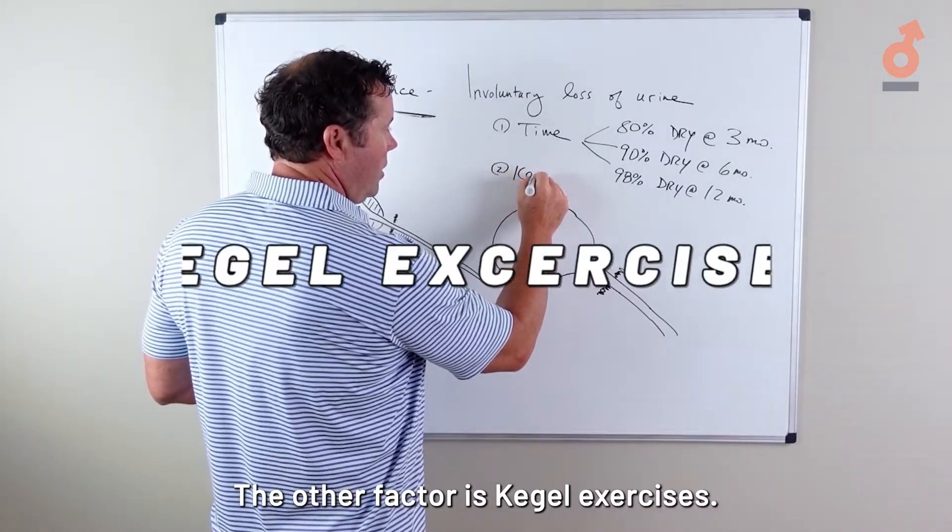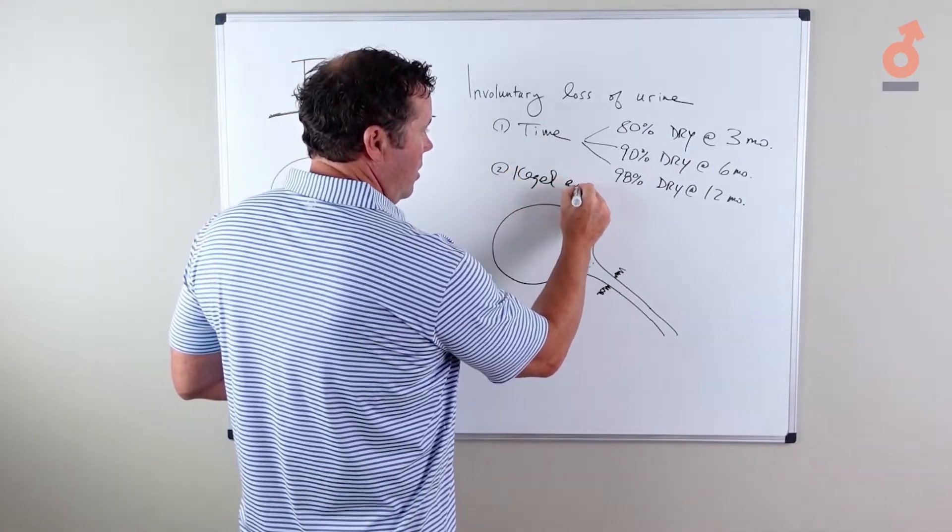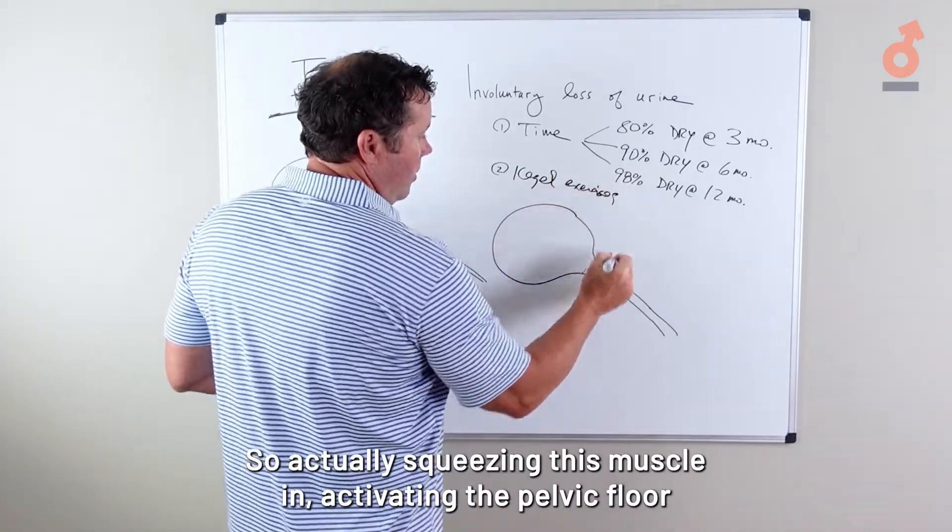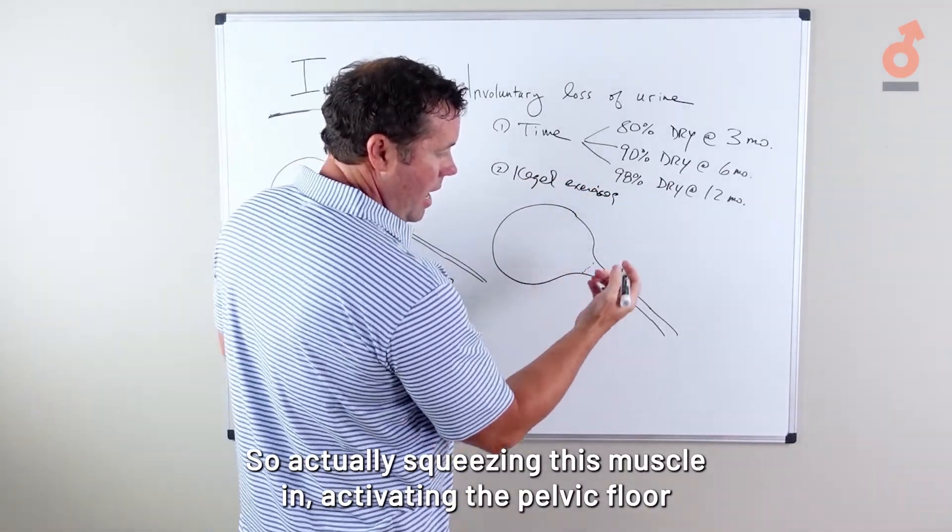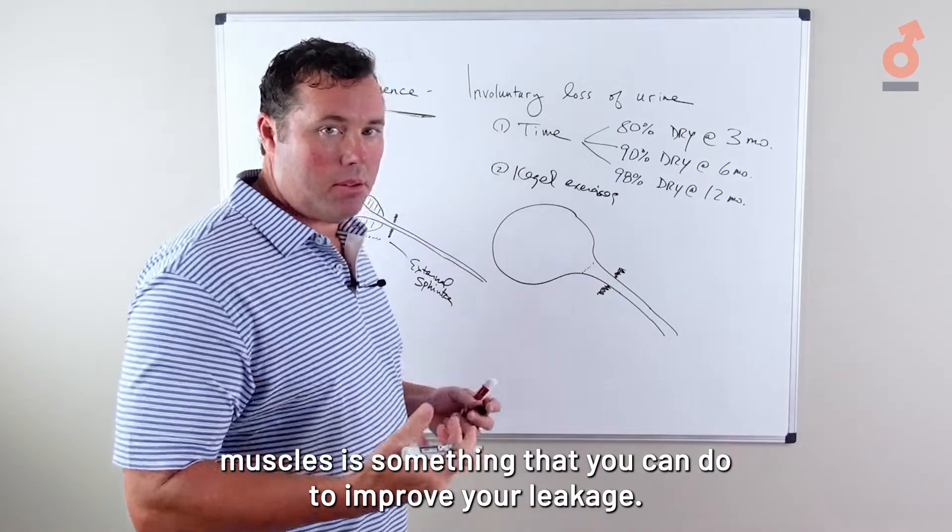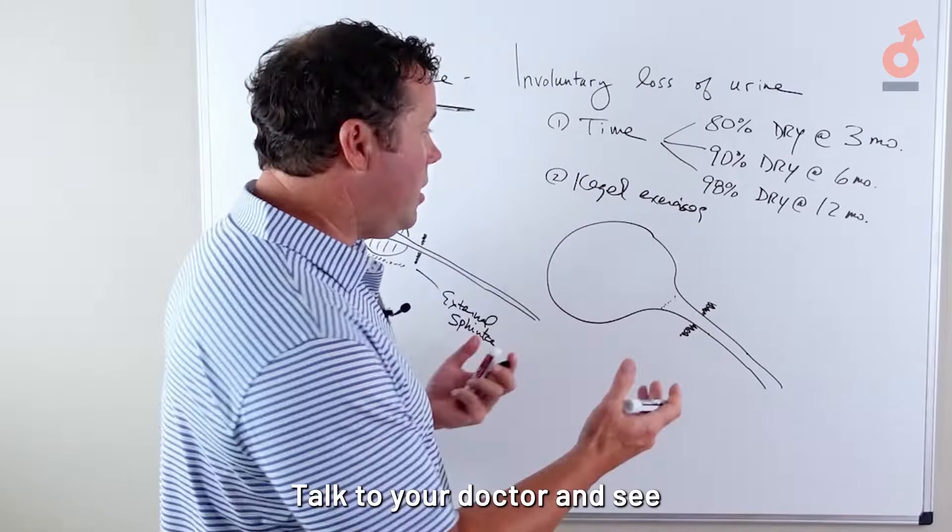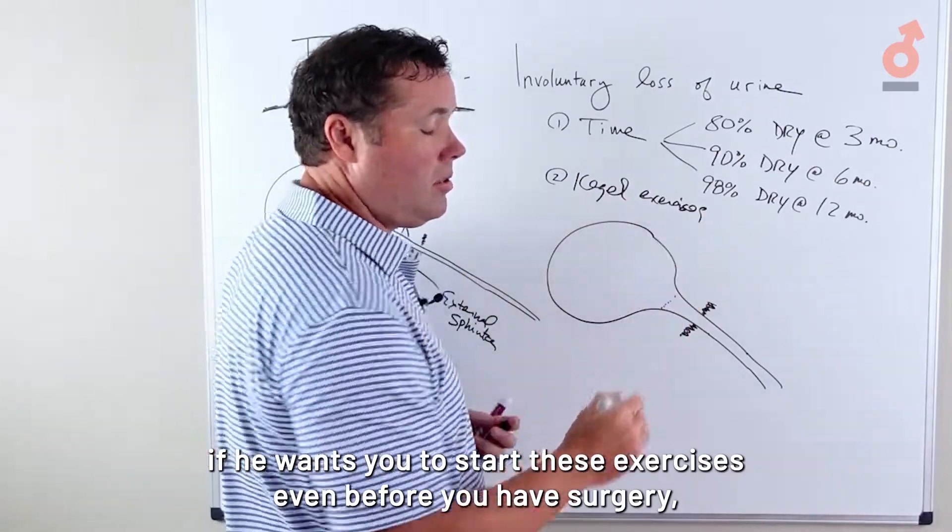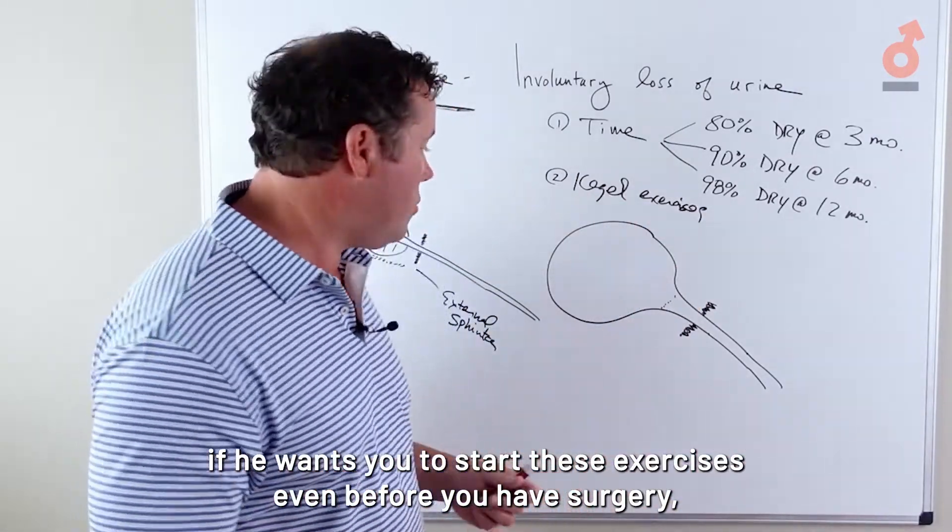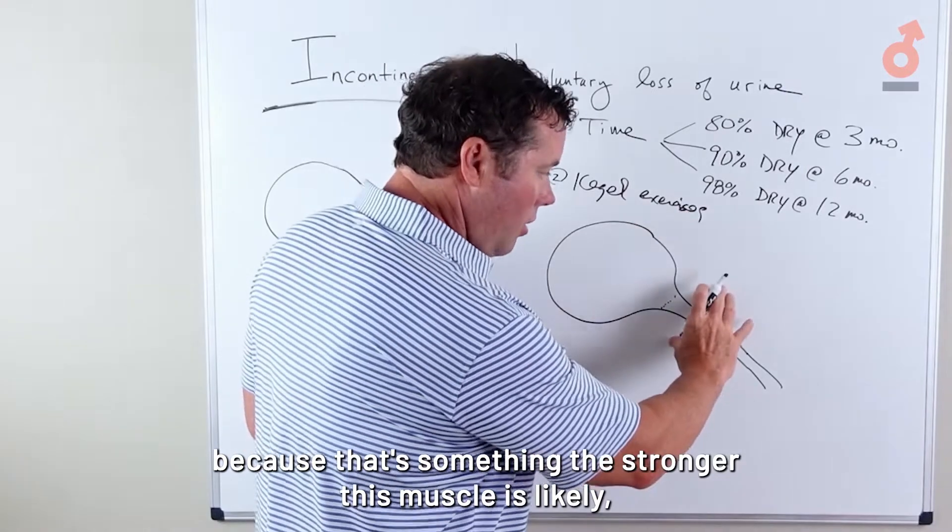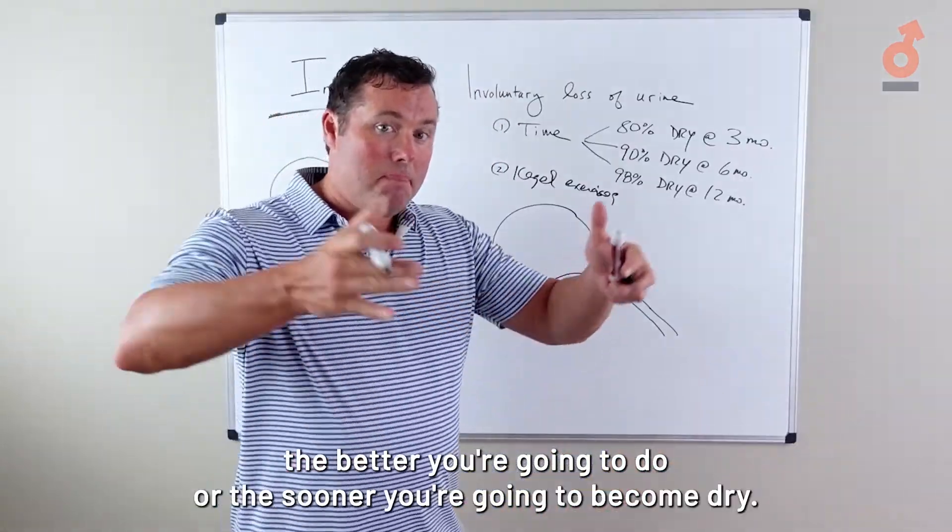The other factor is Kegel exercises. Actually squeezing this muscle and activating the pelvic floor muscles is something that you can do to improve your leakage. Talk to your doctor and see if he wants you to start these exercises even before you have surgery, because the stronger this muscle is, likely the better you're going to do or the sooner you're going to become dry.